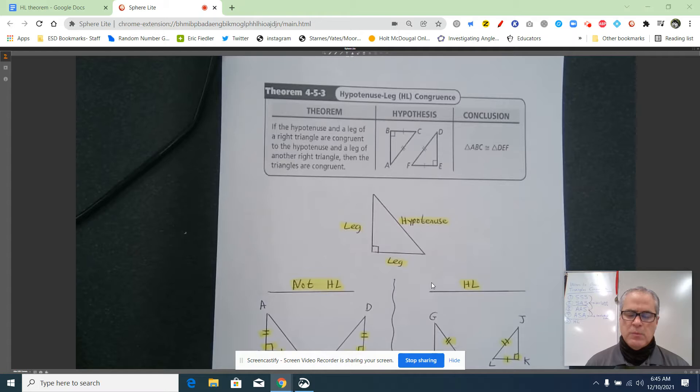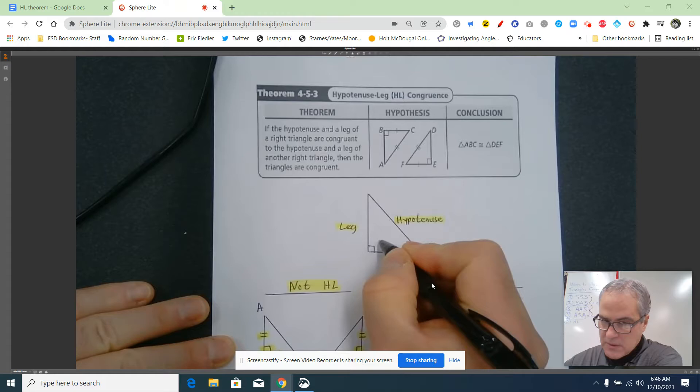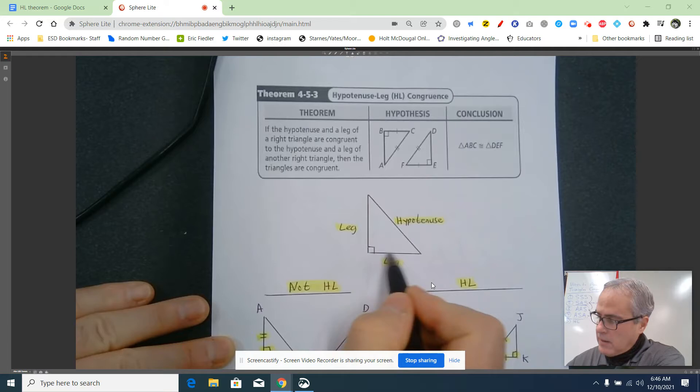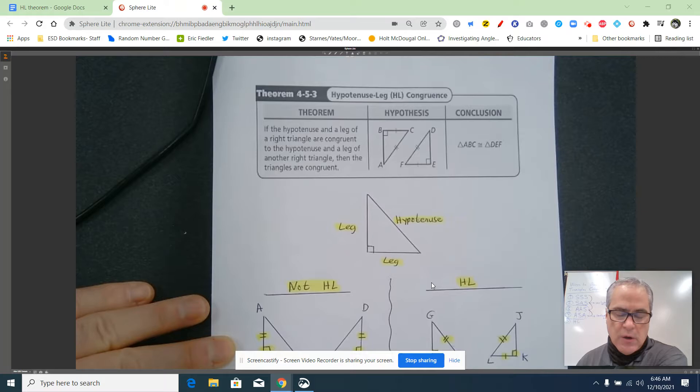you have to be very clear on what the hypotenuse and a leg are of a right triangle. The hypotenuse is always opposite the right angle and is the longest side. The legs are either of the other two sides. This is leg one, leg two, or vice versa. It doesn't matter which one you call the leg.